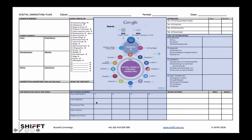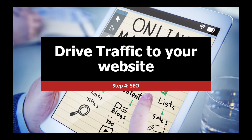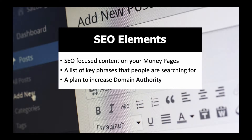You also start to get a sense of which platforms you're going to use, what your calls to action are, and what you want to build into your email. Driving traffic to your website — you can bring them from social media or other places — but one of the key things to think about is SEO, or search engine optimization. The important part of SEO is to make sure it's focused content on your money pages.